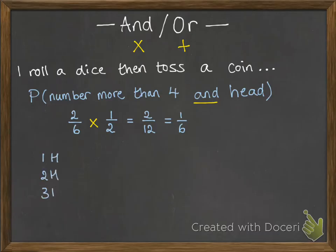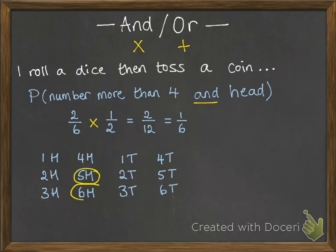Let me show you exactly how that works here. I've listed all of the possibilities that you could get when you roll a dice and toss a coin. So you could get a one with a head, a two with a head, a three with a head and so on. All of them are shown there. So you've got 12 possible outcomes. Which of these fit this category where it gives you a number more than four and a head? We've got the five with a head and a six with a head. That means it's two out of 12 possibilities, which cancels down to the sixth that I just showed you.